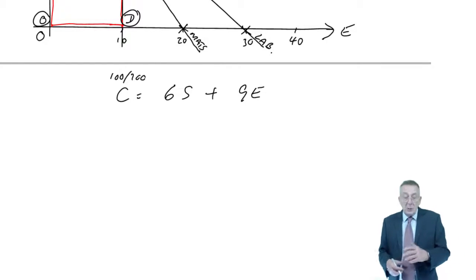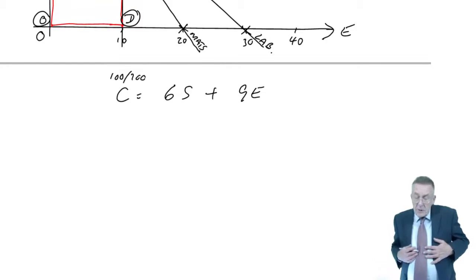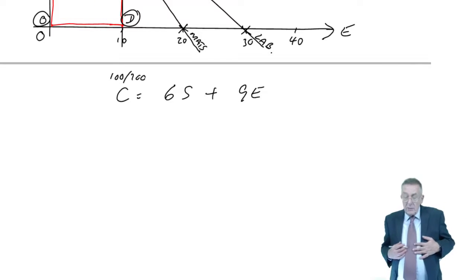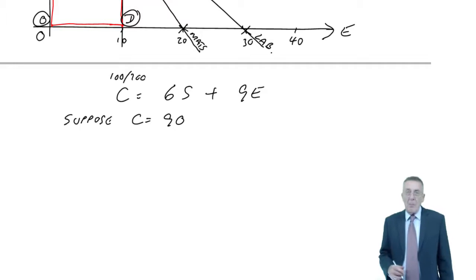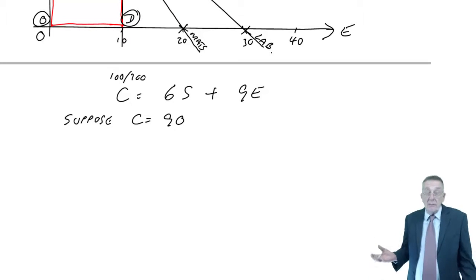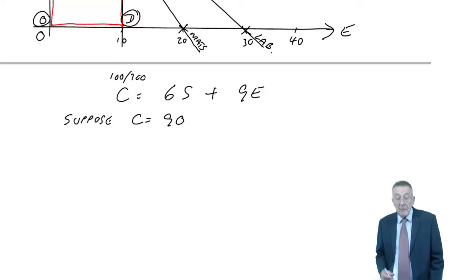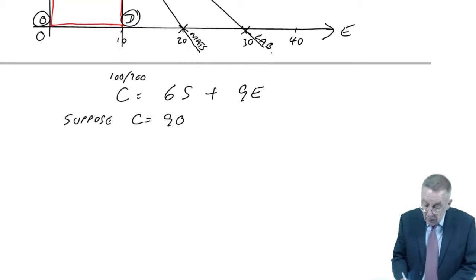And so what we do, pick any contribution we want. I'll pick a contribution of 90. Suppose the contribution is 90. Just suppose. I have no idea. Might be 90, might be 900. No idea at all. But if it were 90, 6S plus 9E would be 90.